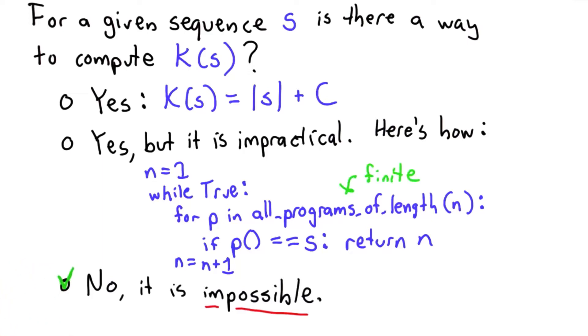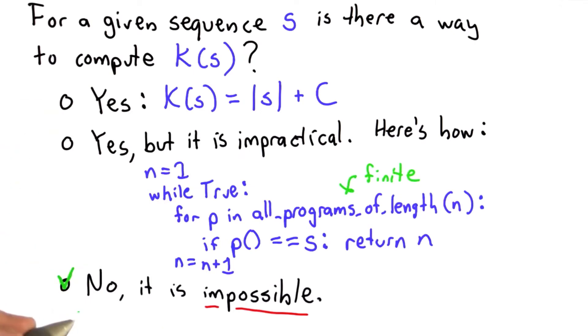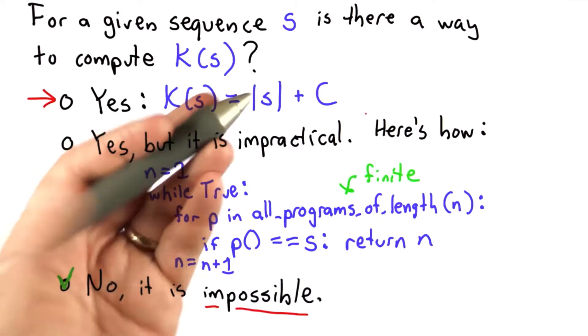The answer is that it's theoretically impossible to compute this for an arbitrary sequence. The first answer is not correct. If s is truly random, this would be correct. But if s is not truly random, there might be some shorter way to compute it.